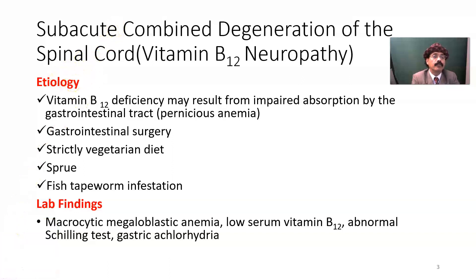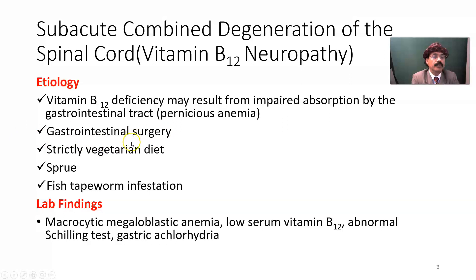What are the causes of subacute combined degeneration of the spinal cord or vitamin B12 neuropathy? Vitamin B12 deficiency may result from impaired absorption by the gastrointestinal tract, that is pernicious anemia; gastrointestinal surgery like bariatric surgery or bypass surgery; a strictly vegetarian diet with no egg or milk; sprue, a type of malabsorption; and fish tapeworm infestation, which also prevents absorption of vitamin B12.